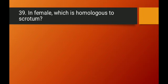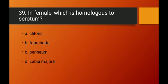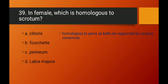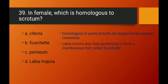Question number thirty-nine: in females, which structure is homologous to the scrotum? The clitoris is homologous to the penis (both supported by corpora cavernosa). Fourchette is the membranous fold formed by the posterior fusion of labia minora. Perineum is the area between the fourchette and the anus. Labia majora is homologous to the scrotum. Option D — labia majora — is the right answer.